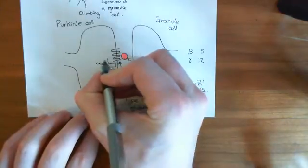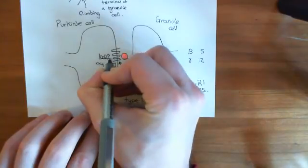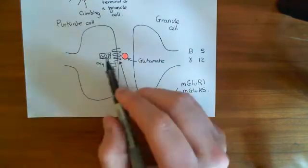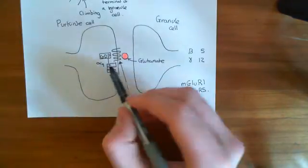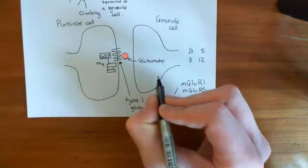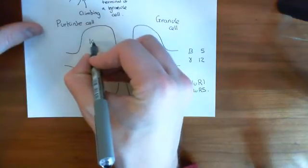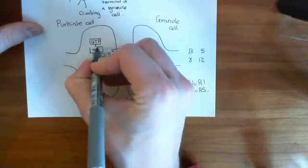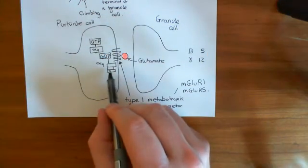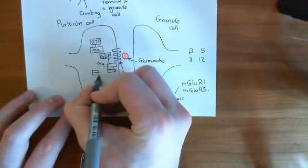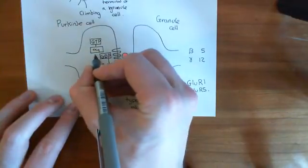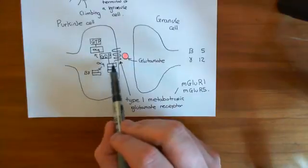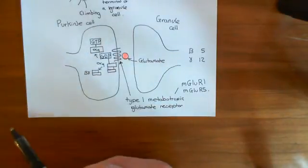Initially, when the G protein is inactive, the alpha-Q subunit has GDP bound to it. When glutamate binds to this metabotropic glutamate receptor, it becomes catalytically active and breaks the bond between GDP and alpha-Q, attaching GTP — guanosine triphosphate — to alpha-Q instead. Once GTP is bound to alpha-Q, it no longer associates with the beta and gamma subunits, so they dissociate. This type 1 metabotropic glutamate receptor catalyzes this exchange of GDP for GTP on the alpha-Q subunit.